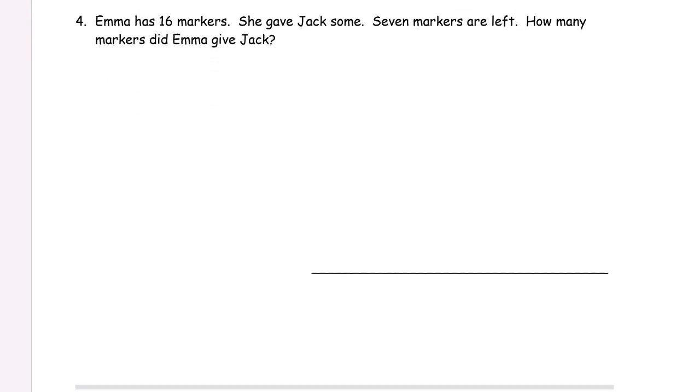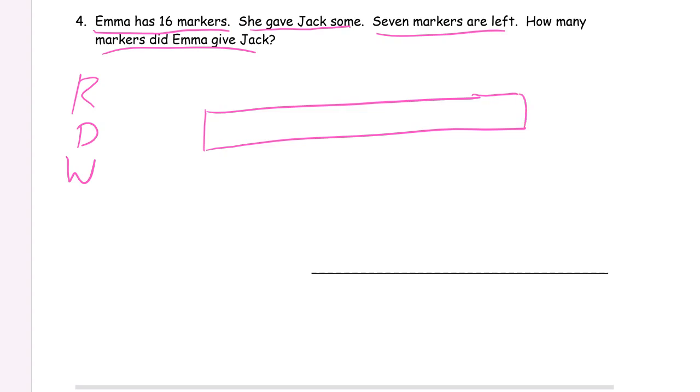Now we just have a word problem. Emma has some markers, we're going to RDW this. She has 16 markers. She gave Jack some, so we don't know exactly how many she gave him, but we know that there are 7 markers left. How many did she give Jack? So she's going to have markers, she's going to give some away and she's going to have some left. So the most she's going to have is what she starts out with because when she gives them away she's going to have less and she can't give away more than she has. So she has 16 markers to begin with and then some of these she gave to Jack and some of them are left. We don't know how many she gave Jack, that's the sum, but we know that there are 7 left.